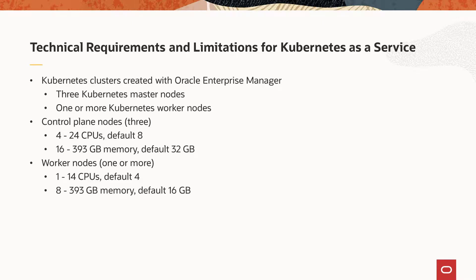Kubernetes clusters built with the Oracle Private Cloud Appliance always contain three control plane nodes and a load balancer. A cluster can be created with one or more worker nodes. The DHCP type network option for creating a Kubernetes cluster creates from one to many worker nodes as needed. Control plane nodes can have between 4 and 24 CPUs with a default of 8 CPUs, and control plane nodes can have between 16 and 393 GB of memory with a default of 32 GB.